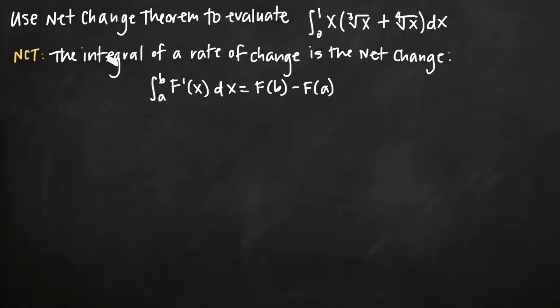Now the net change theorem, or the NCT, says that the integral of a rate of change is the net change. And it gives you this theorem right here. Basically what this means is we need to remember that taking the derivative and taking the integral are opposite actions, and that factors into this theorem.